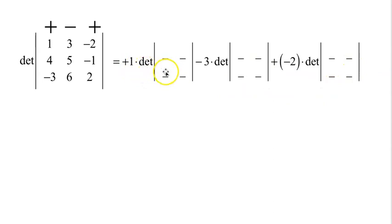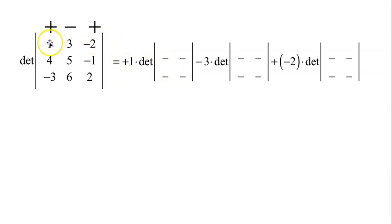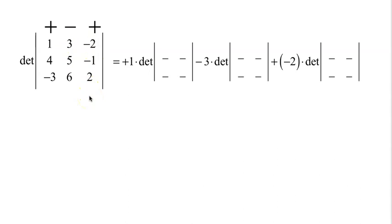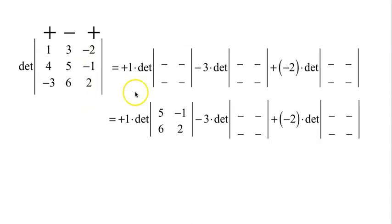Notice: plus 1 times the determinant of some matrix, minus 3 times the determinant of some matrix, plus negative 2 — plus-minus-plus. Now what is the minor for plus 1? The 1 is in the first row, first column. Cross out the row 1 is in, cross out the column that 1 is in. What remains is 5, -1, 6, 2. That is the minor corresponding to 1.